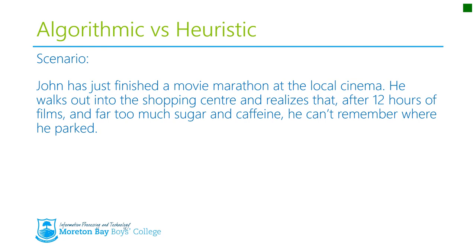To finish off this presentation, I want to provide you with a scenario. John has just finished a movie marathon at the local cinema. He walks out to the shopping centre and realises that after 12 hours of films, too much sugar and caffeine, he can't remember where he parked. On the next two slides, you'll get a chance to say how John will find his car — first as a human being using heuristic methods, and then as if he were a robot using algorithmic methods. Submit those and we'll have a chat about them in class.